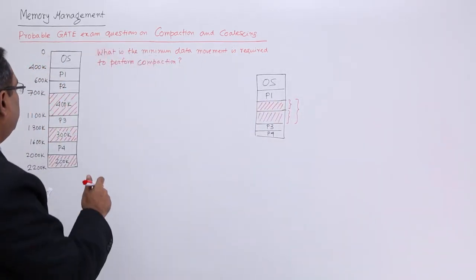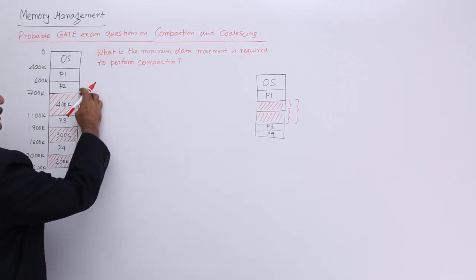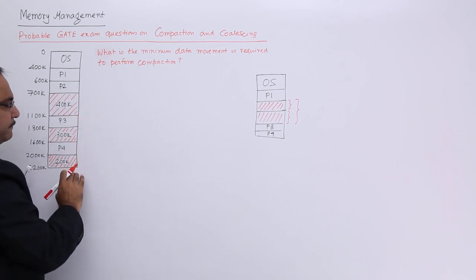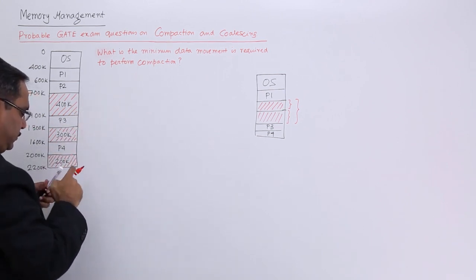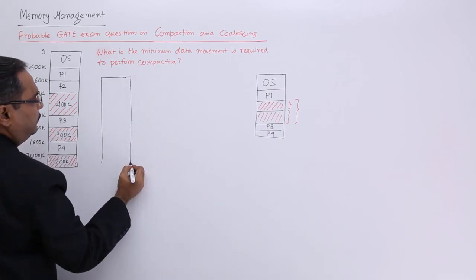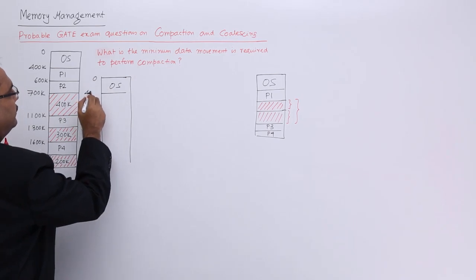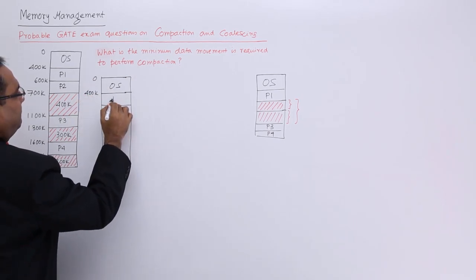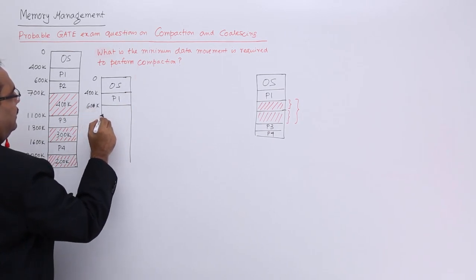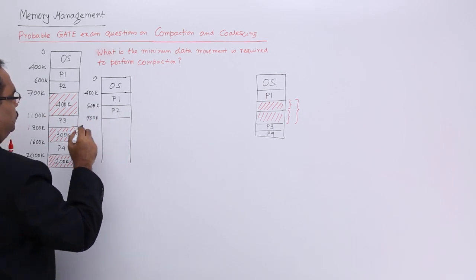Let me go for one or two or three solutions here. So, solution number one is that, I can move this P3 here, I can move this P4 here and so, I can get a free space. So, if you draw the diagram in that case, then it will be like this. I am drawing this one, so that is the OS, that is 0 to 400k, that is the P1, same thing that is 600k and there is a P2, 700k up to.